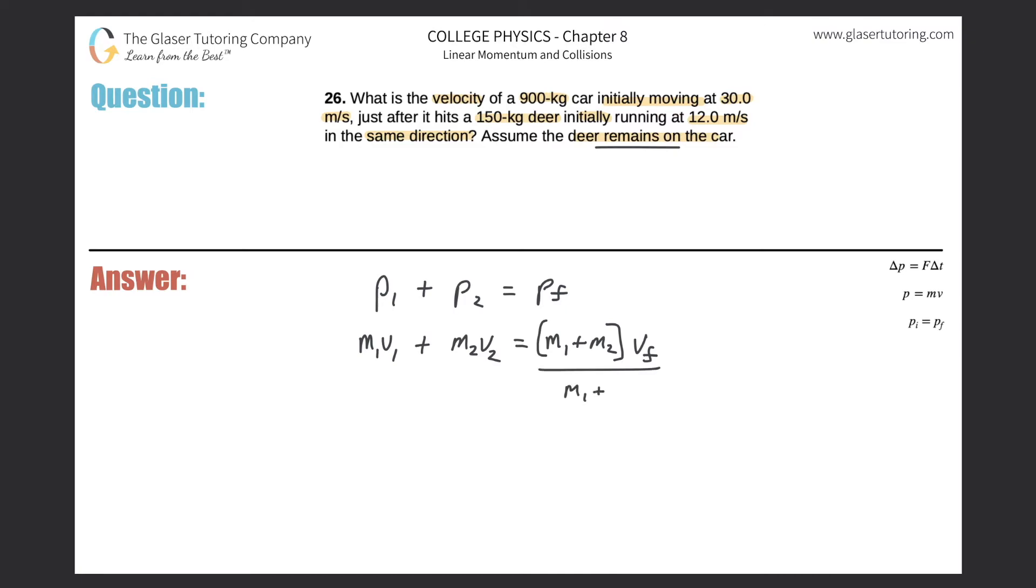So now what I'm going to do is just solve this algebraically for the final velocity. So simply just divide out M1 plus M2. And we have now a nice beautiful formula. We've seen this now a couple of times. M1 V1 plus M2 V2 all over M1 plus M2 will equal the final velocity.